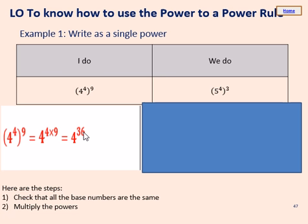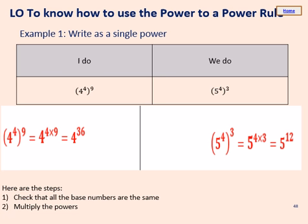Please pause the video, copy that first example down, and then do the we-do for yourselves. For the we-do: 5 to the power 4, all raised to the power of 3 — remembering our rule is that we multiply the two indices. So 4 times 3 gives 12, so our final answer is 5 to the power of 12.